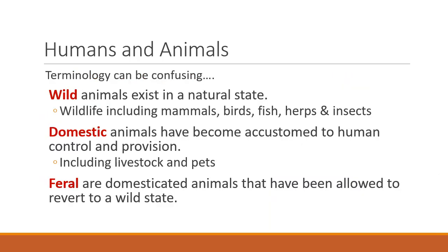Before we dig in, let's make sure that we're all on the same page when we talk about how our relationship as humans has evolved with animals. First of all, let's talk about wild animals. Those are ones that exist in their natural state. We might call them wildlife, such as wild mammals, birds, fish, herps, and don't forget insects — they're highly important on rangelands.